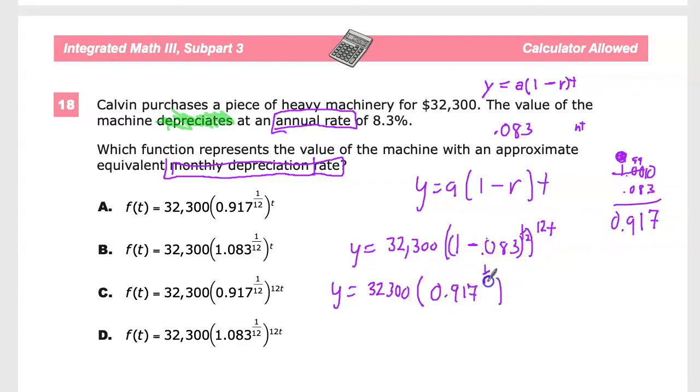And again, because I'm doing it monthly, I need to do that. And then I need to adjust with this on the outside. So here you have it. A couple of things that you could have looked for that would have helped you very early on. Since it's a depreciation rate, there's no way it's going to be 1.083. So that was never going to happen.